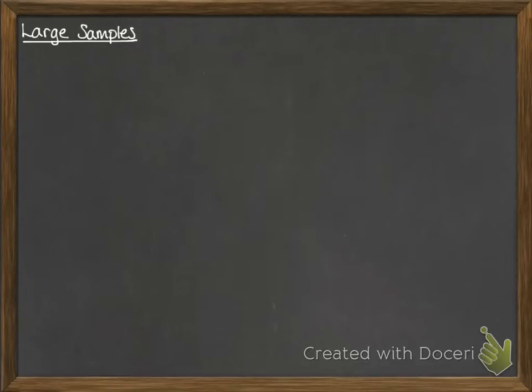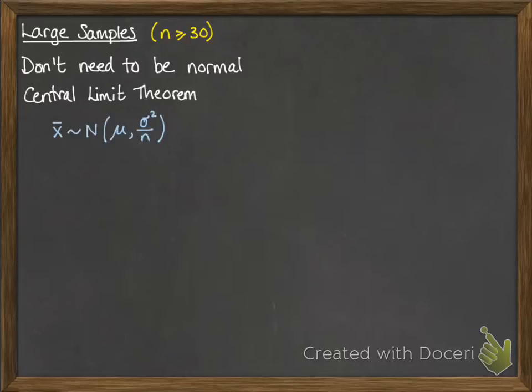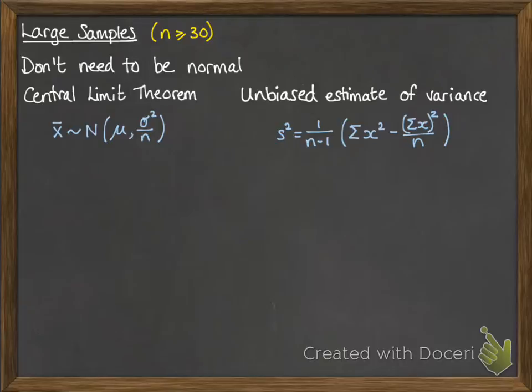If you have large samples, you can do certain things with them and make certain assumptions. Large means anything bigger than 30. That means it doesn't need to be a normal distribution. We can use the Central Limit Theorem to say that the mean is normally distributed if the sample size is more than 30, and we can also use an unbiased estimate of the variance if we don't have the population variance given to us.